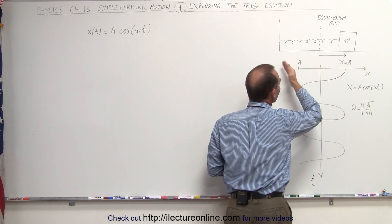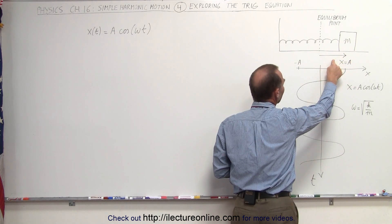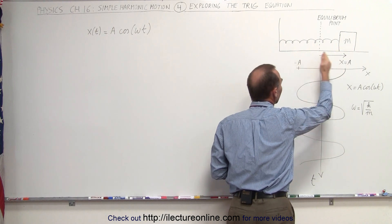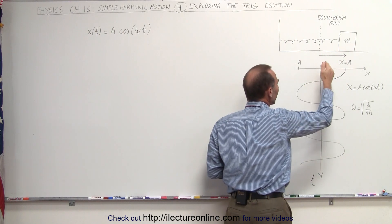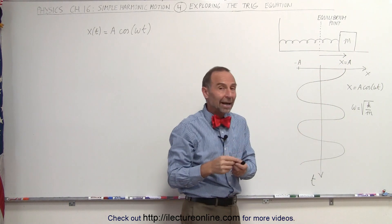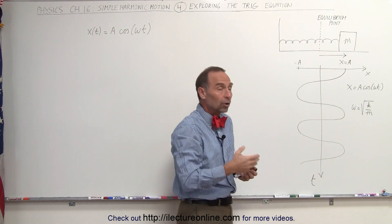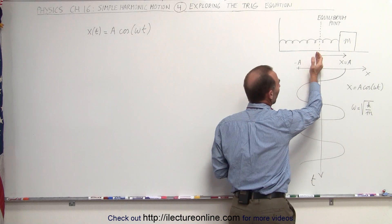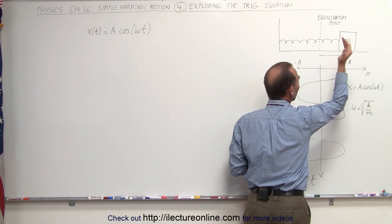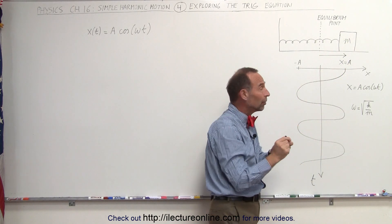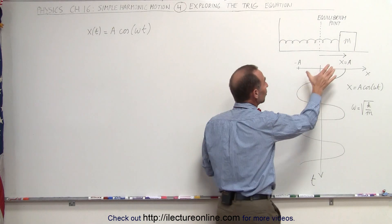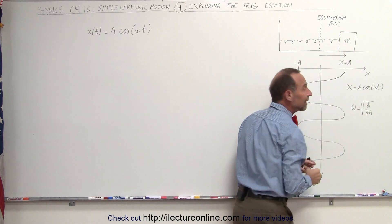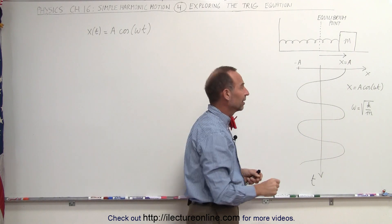That motion back and forth — as the position x changes from positive a to negative a, back to positive a, back to negative a — can be represented by a trigonometric function like a cosine or a sine. In the case where we pull the block to its maximum position and let go, so when t equals zero the position x equals a, the function x equals a times cosine of omega t best defines that.